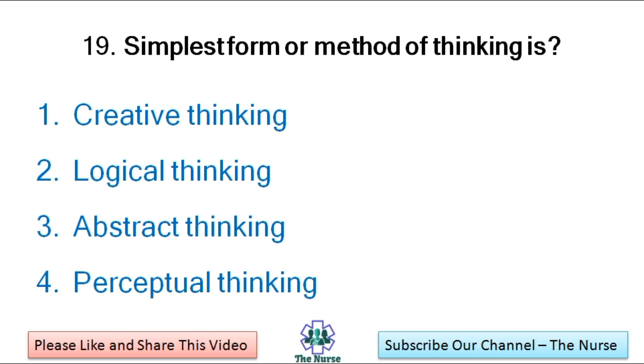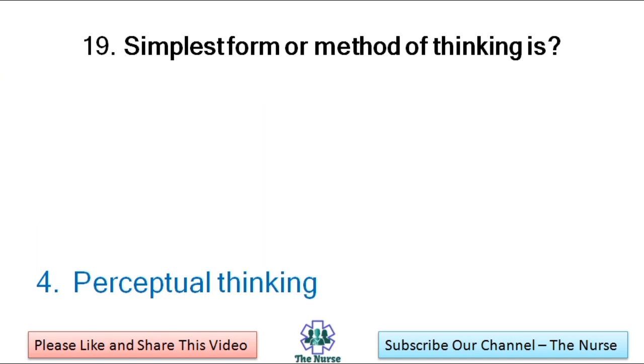Next question: Simplest form or method of thinking is — creative thinking, logical thinking, abstract thinking, perceptual thinking. Correct answer: Perceptual thinking.